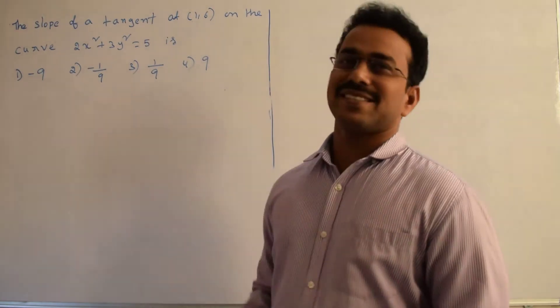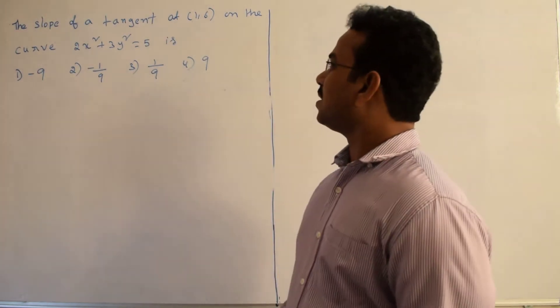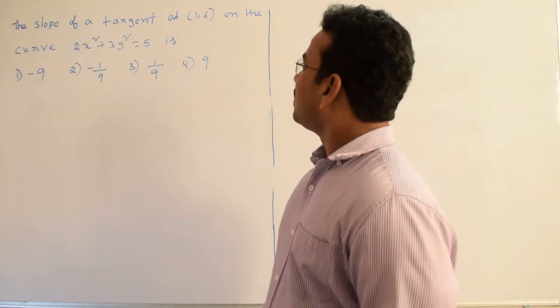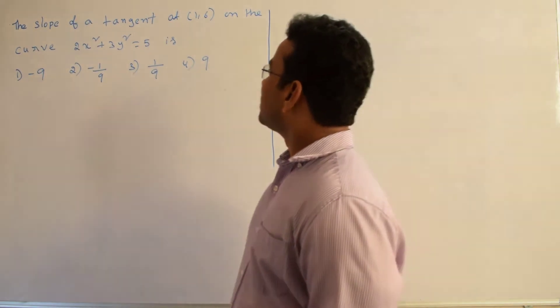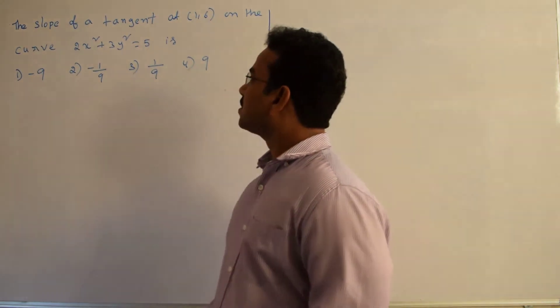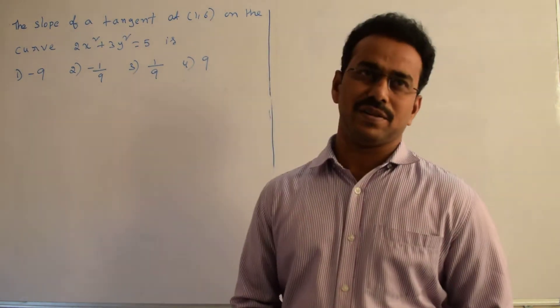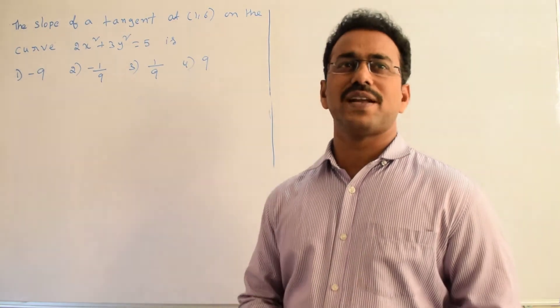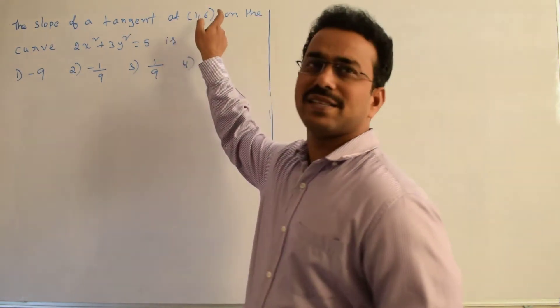Let's discuss the solution of the given problem. The slope of a tangent at the point (1, 6) on the curve 2x² plus 3y² equals 5. We need to find the slope of the tangent at this point (1, 6).